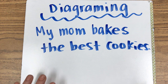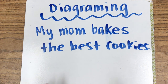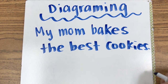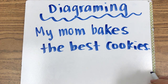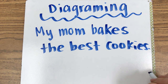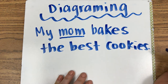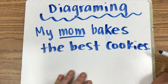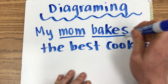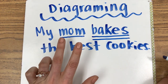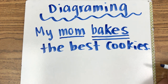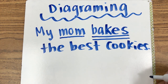First, before you can diagram it — before you can break it down — you want to be able to find your subject and verb. And guess who's been practicing finding subjects and verbs? You guys have. So, I ask myself: who? Mom. That's my subject — underline it once. And what? What does she do? She bakes. Underline that twice — that is my verb. So, mom bakes. These are the two words that I'm going to diagram.